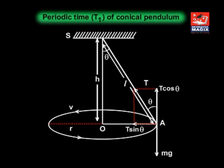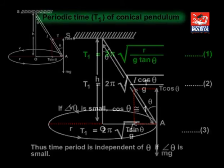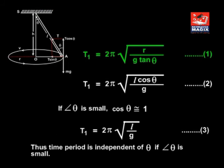Then periodic time T₁ of conical pendulum: T₁ = 2π√(r / g tan θ), or T₁ = 2π√(l cos θ / g).